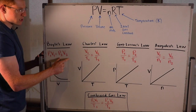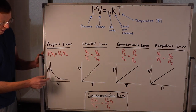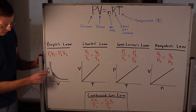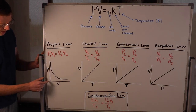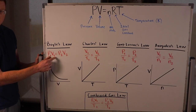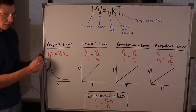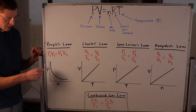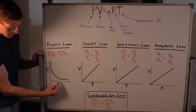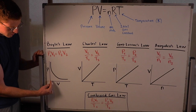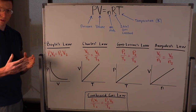This assumes the number of moles and temperature are held constant. Graphically, pressure is on the y-axis and volume is on the x-axis. Since they're multiplied together to make a constant, one must increase while the other decreases. When pressure goes up, volume goes down; when volume goes up, pressure goes down — they're inversely related.